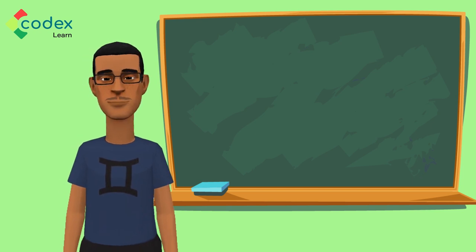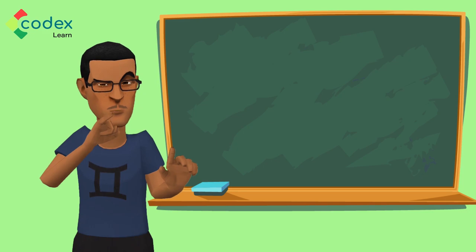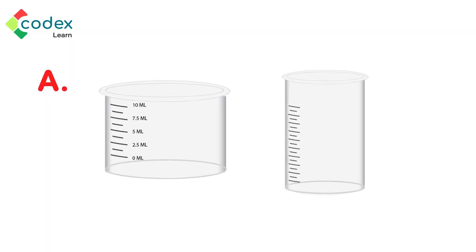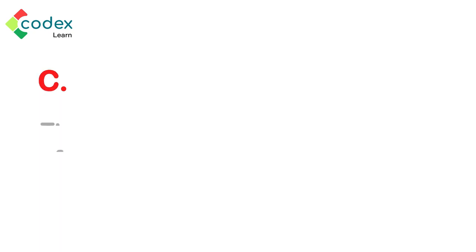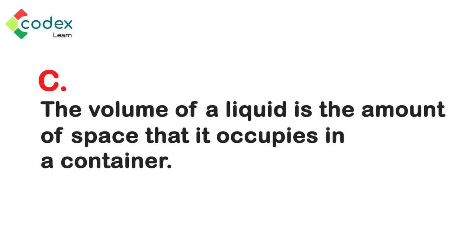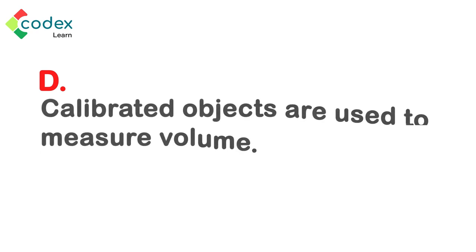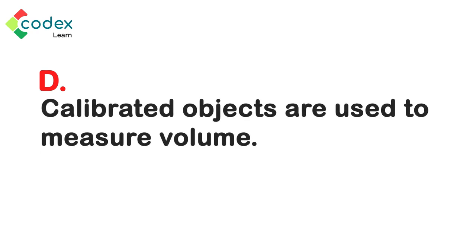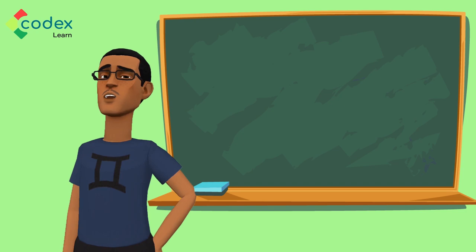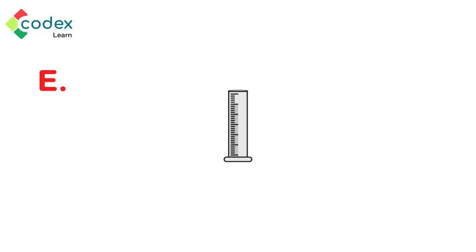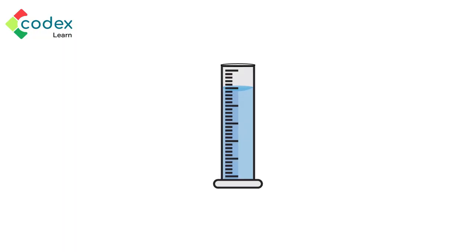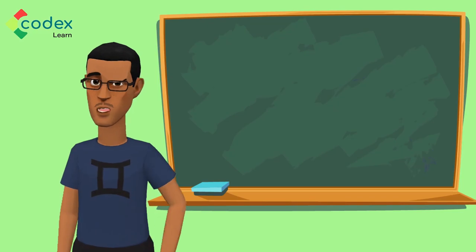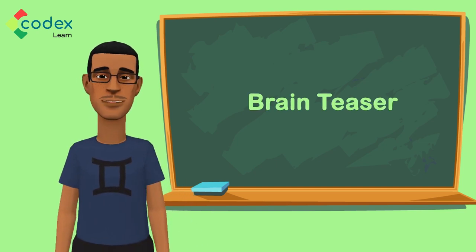Now let us revise the highlights of our lesson today. A: Calibrated objects are those things that have measurements written on them. B: Liquids are substances that are not gas or solids. C: The volume of a liquid is the amount of space that it occupies in a container. D: Calibrated objects are used to measure volume. E: The most commonly used volumetric glassware in laboratories is the measuring cylinder. F: The bottom curve that forms sometimes when liquids are measured is called meniscus.